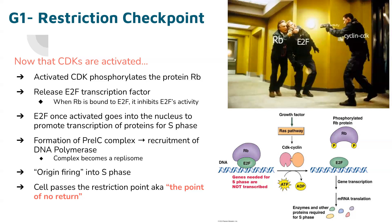One piece of advice: when thinking about questions like this, it helps to label each of these proteins as either a proto-oncogene or a tumor suppressor, so you can identify what's going to happen in the cell if something is mutated. E2F is your transcription factor, so it's your proto-oncogene, and RB is going to be the tumor suppressor — it's kind of holding back something that's going to encourage the cell to divide.